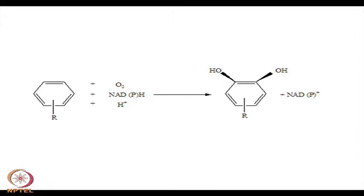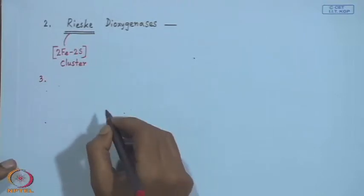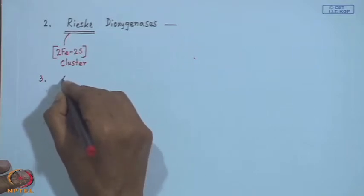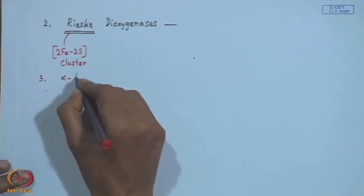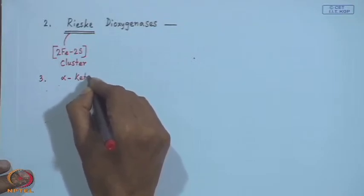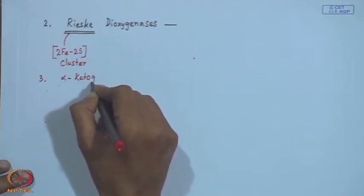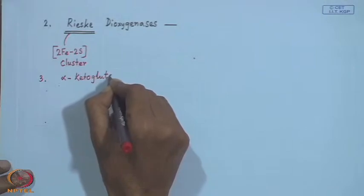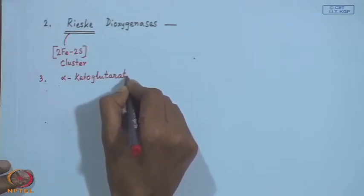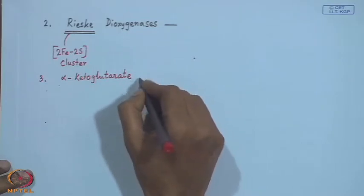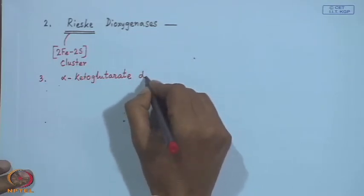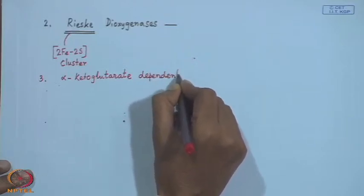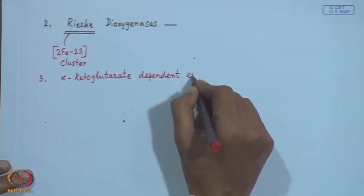The next category of reaction is alpha-ketoglutarate-dependent enzymes. These are very useful reactions.